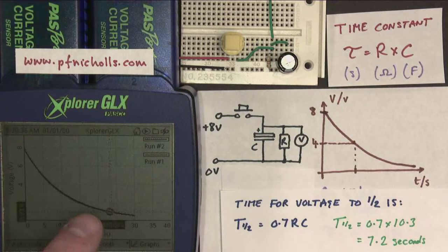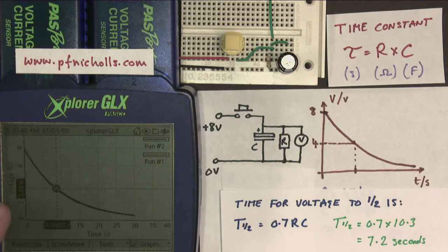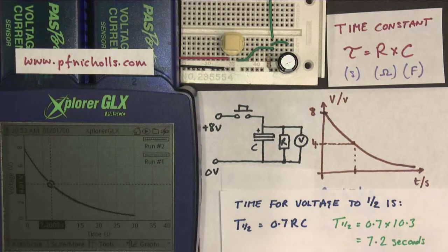Use my tracking tool just here to go back up the graph. Make the voltage come to 4 volts. And there we go, 7.2 seconds. It works fantastically well. So that is the time that it took to go from 8 volts down to 4 volts.